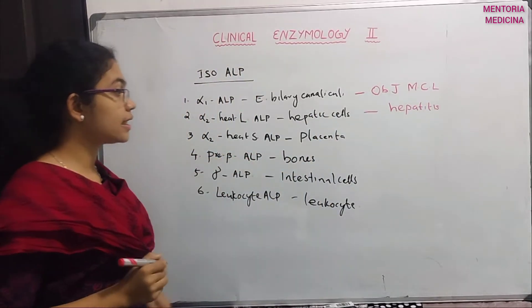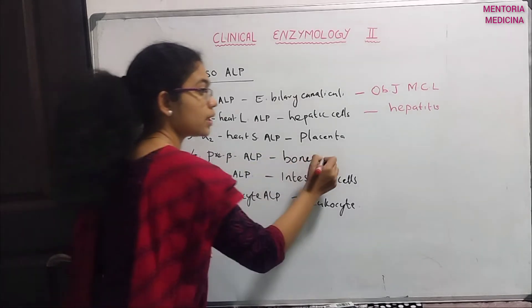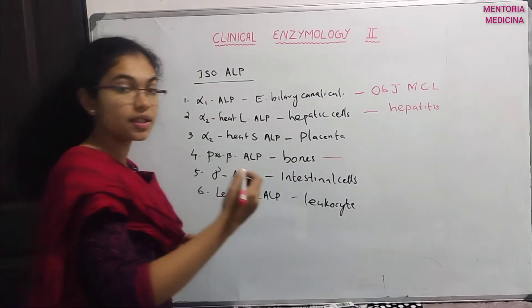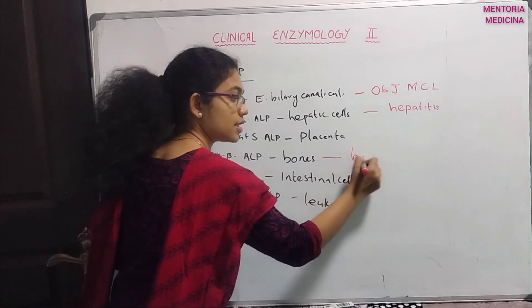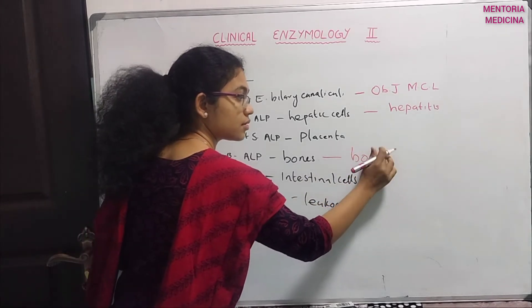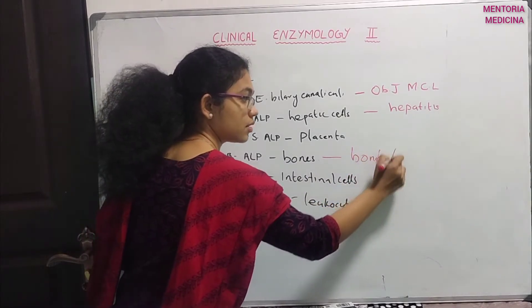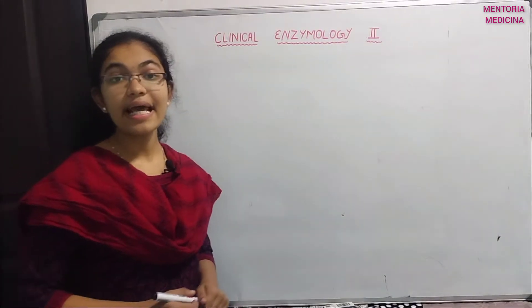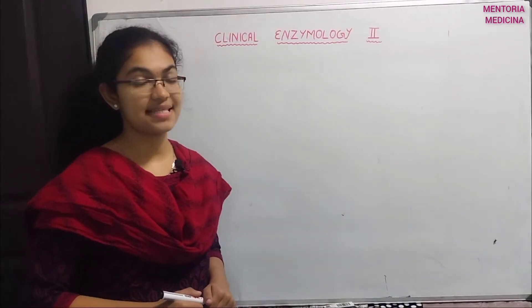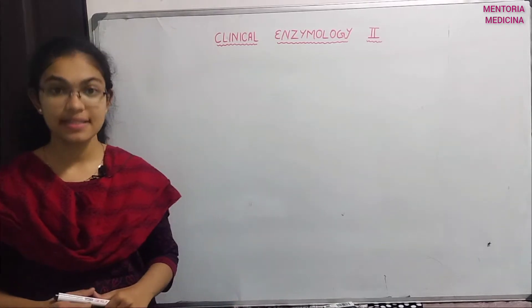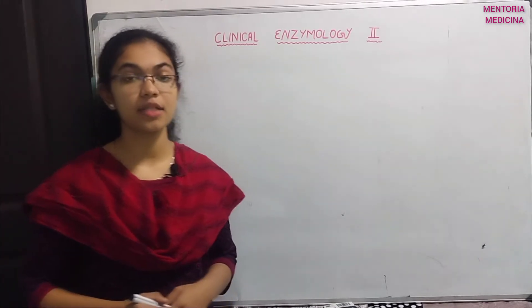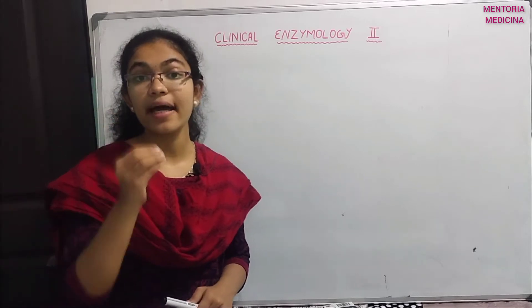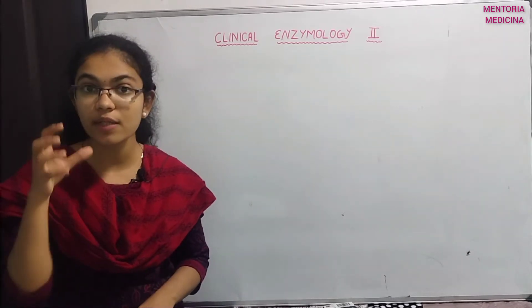Pre-beta alkaline phosphatase is associated with bones, and its elevated level indicates bone disease. For a right diagnosis of a particular disease, we look at the enzyme pattern in disease.